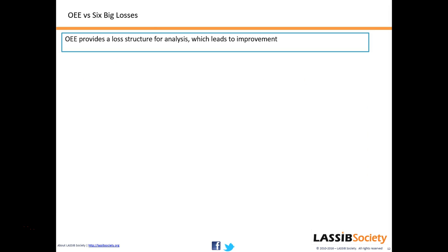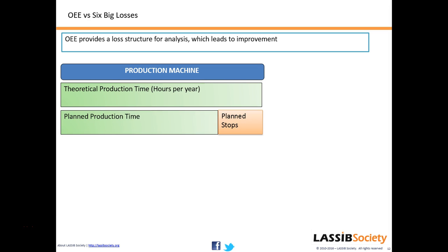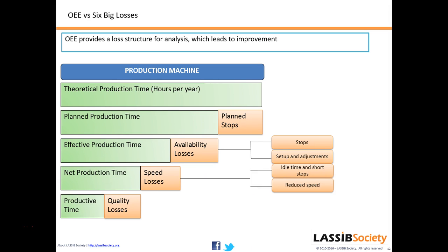Now we talk about OEE and the six big losses, using a time hierarchy. Theoretical production time is the total time available in any year, month, or shift. Planned production time removes the planned stops — for example, planned preventive maintenance, meal breaks, planned training schedules when the line is stopped, and week-off days. These planned stoppages are removed from the theoretical production time.